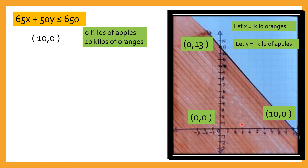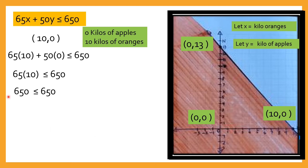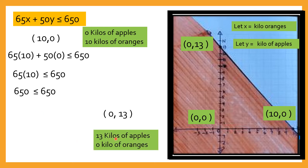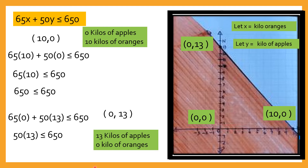Zero kilos of apples, 10 kilos of oranges. Let's verify — pag pinalitan mo yan ng 10 and 0: 650 is less than or equal to 650. So na-maximize mo yung dala mong pera. Dito naman, 13 kilos of apples at zero kilo of oranges — pag sinubstitute natin yan, ang sagot ay 650 is less than or equal to 650. Ayan, na-maximize mo rin yung dala mong pera.